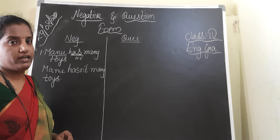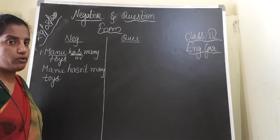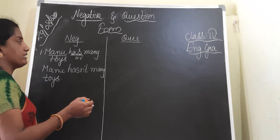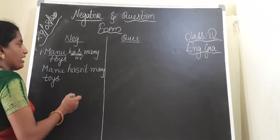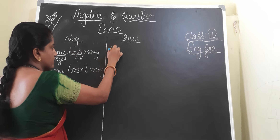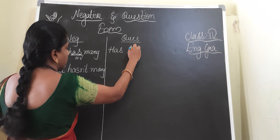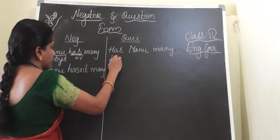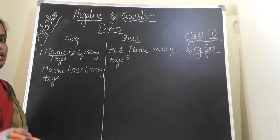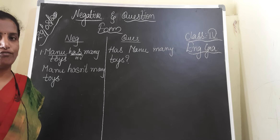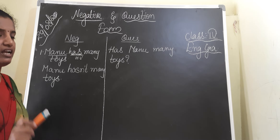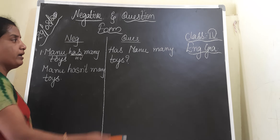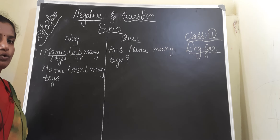Coming to the question form: when you have a helping verb in a sentence, to write the question form you start the question with the helping verb. Here 'has' is the helping verb, so we start our question with 'has': Has Manu many toys? — with a question mark. So when writing the negative form with a helping verb, add 'not' with the helping verb, and for the question form, start the question with the helping verb.